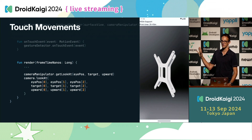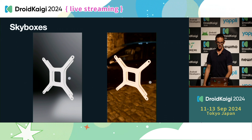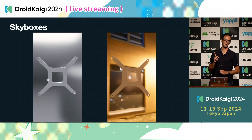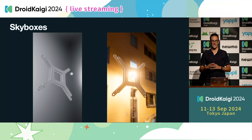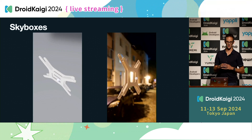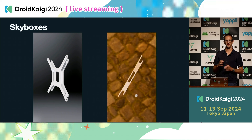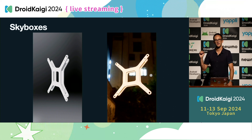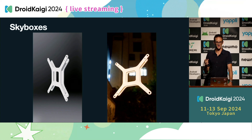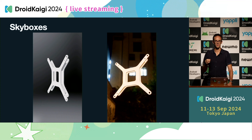Now that we added user interaction, it's even easier to understand how rotating the model around with different skyboxes affects the actual model lighting. You can see that with different skyboxes, the light is widely different and the shadows are as well — this is just an example to show you what the differences are and how skyboxes affect the model.